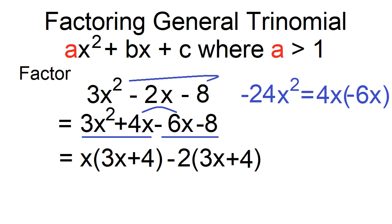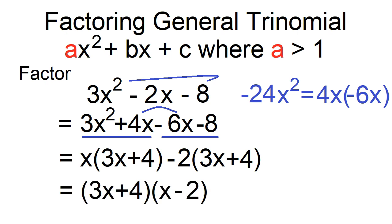Notice that 3x + 4 is common. Factor out the common binomial; the other factor is x minus 2. The factors of 3x² - 2x - 8 are (3x + 4) and (x - 2).